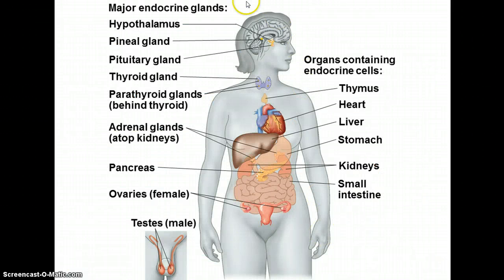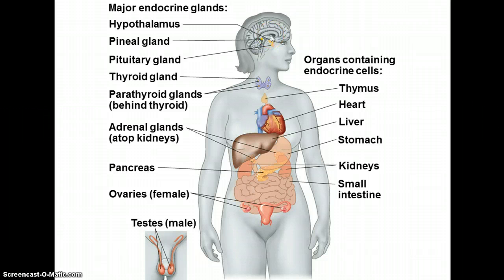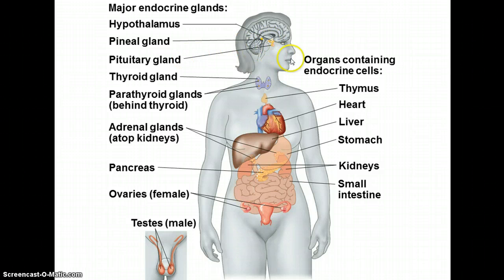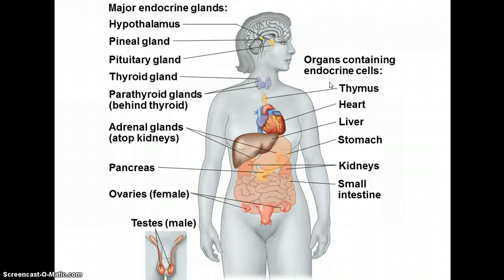So these are the endocrine glands — we're going to talk about each of these a little bit, so you probably want to know just a little bit about each of them. Of course the hypothalamus, at the base of the brain connected to the pituitary gland. Now, some other organs are not endocrine glands themselves, but they do have some cells that have endocrine function.